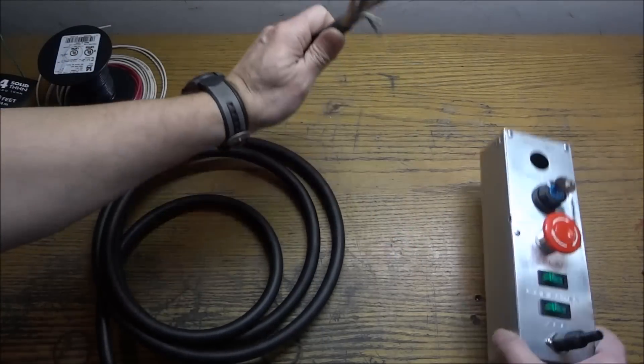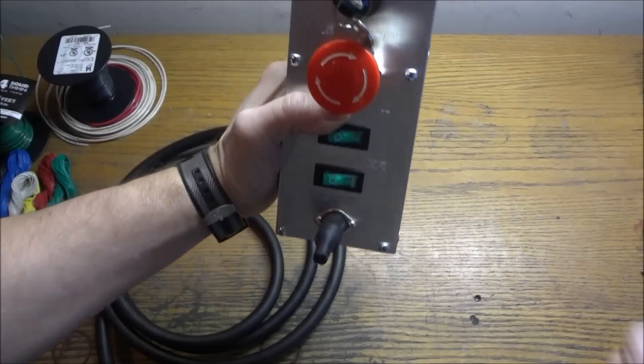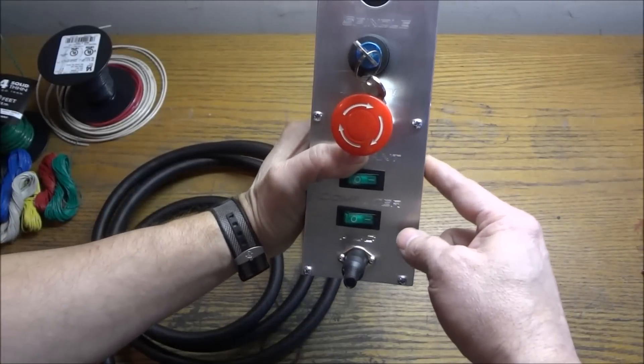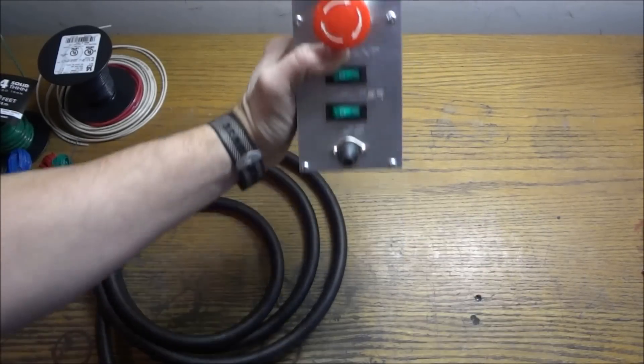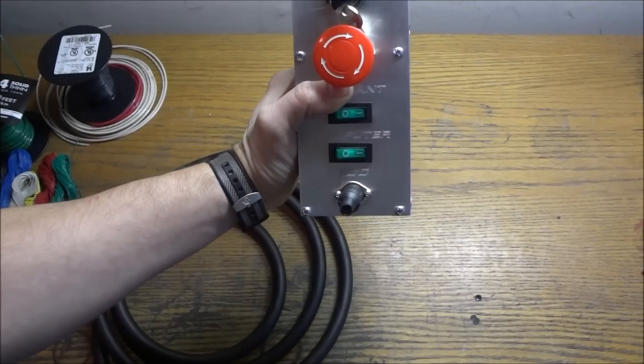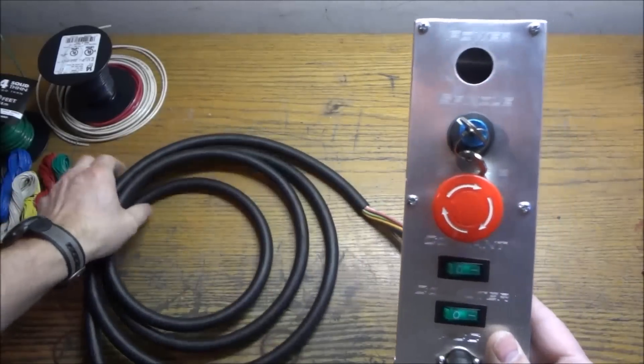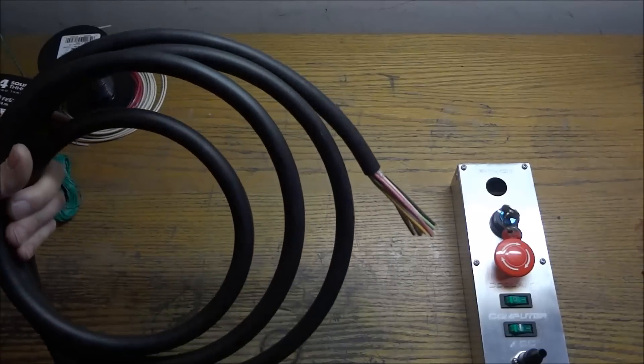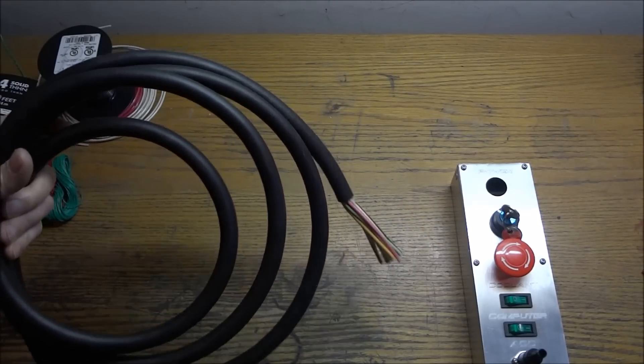And this will just go into the back of the panel and I want this to be flexible because I'm not exactly sure where this is going to be located. I know it's going to be beside my monitor and my monitor is going to be on a swing arm. So it's good to have this flexible. But this is my control circuit cable for my 110 volts.